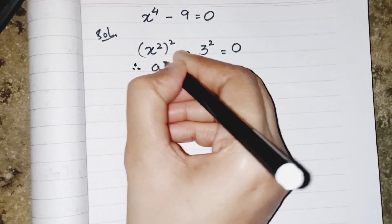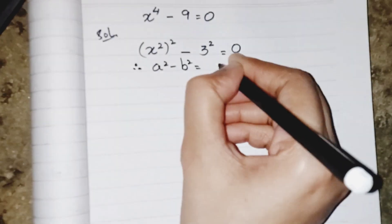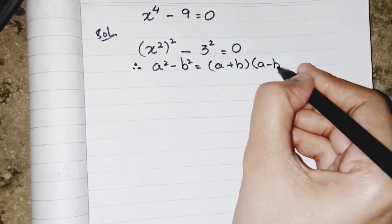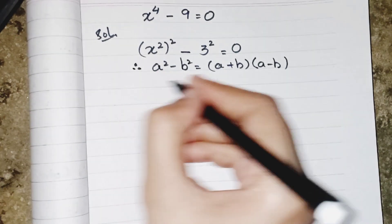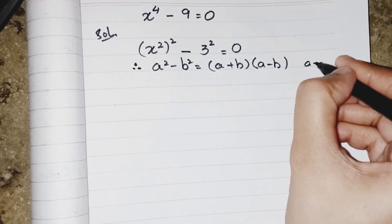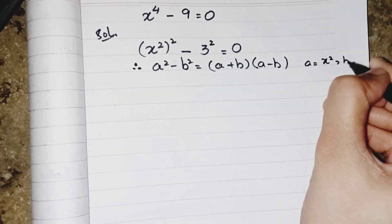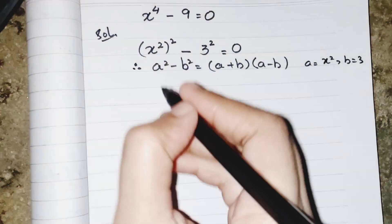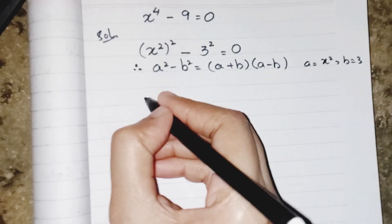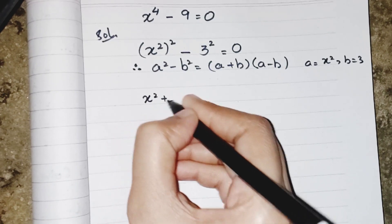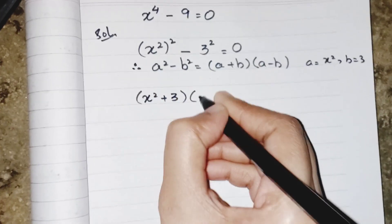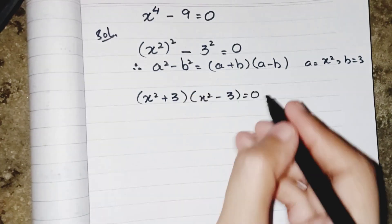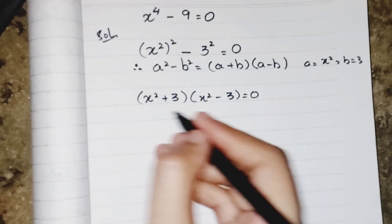This will become the formula of a² minus b² equals (a+b)(a-b), where my a is x² and b is 3. So I have to put the values into the formula, and it will be (x² + 3)(x² - 3) equals 0.